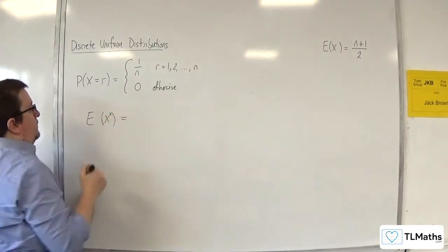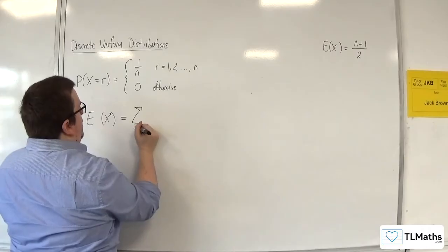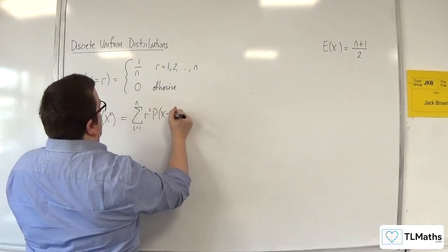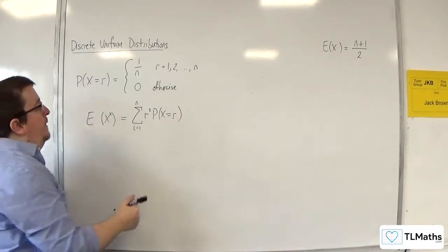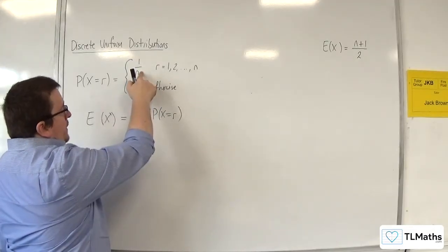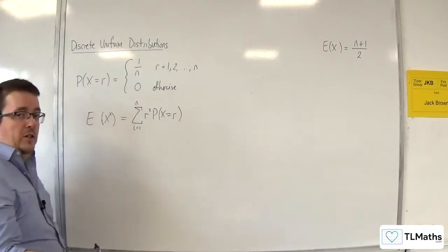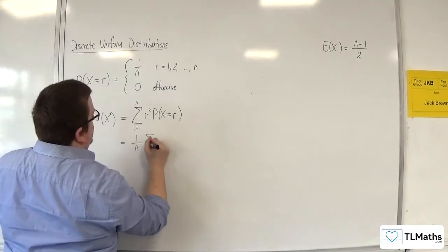First. Now, E of X squared is going to be the sum from r equals 1 to n of r squared times each of the respective probabilities. Now, just as it was before, the probability of X being equal to r is the same as 1 over n. So because I've got r squared times 1 over n, and 1 over n is just a constant multiplier, I can bring 1 over n outside of the summation.